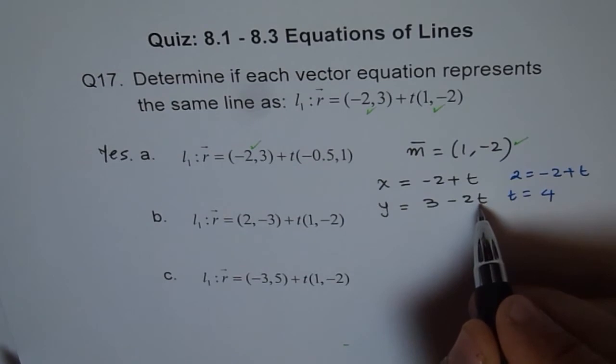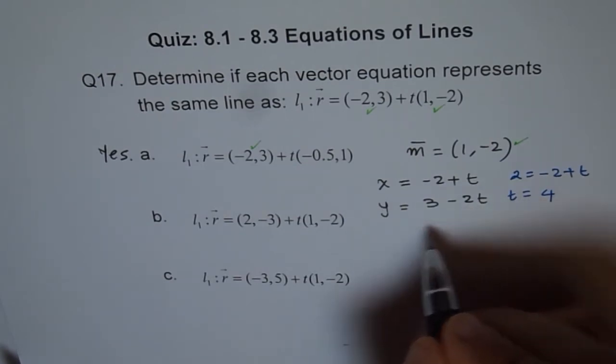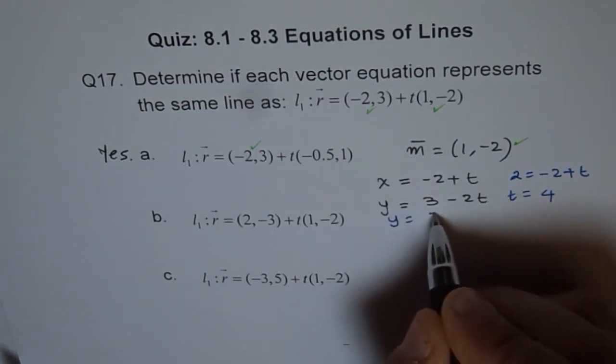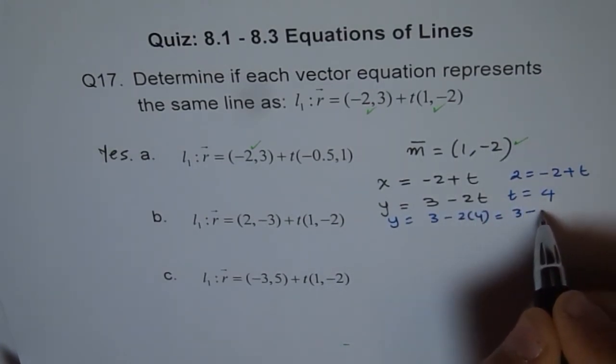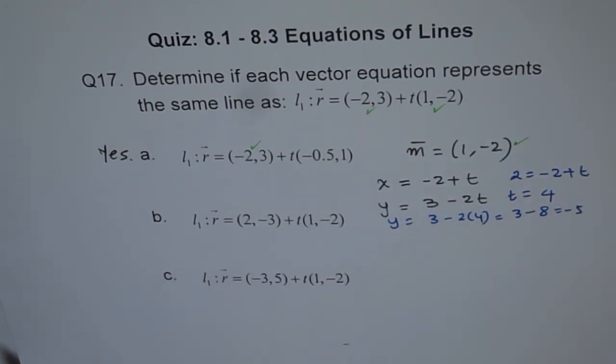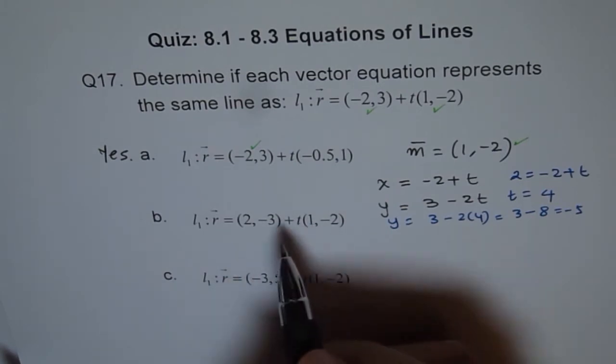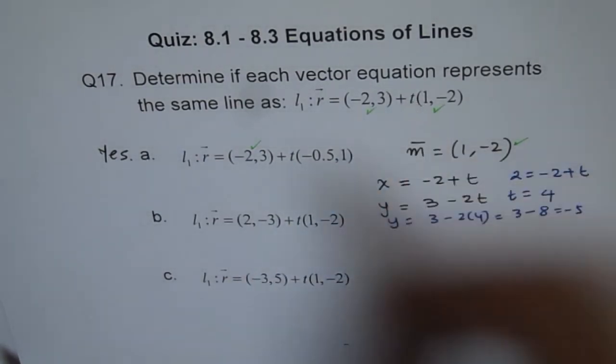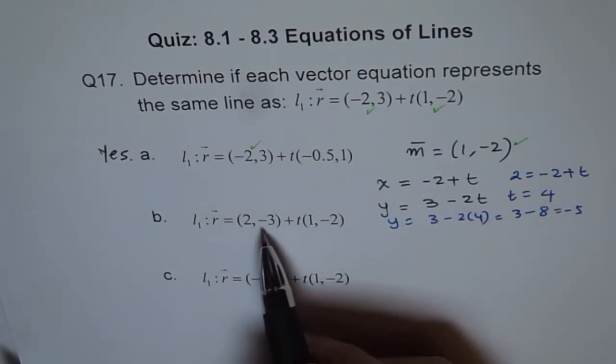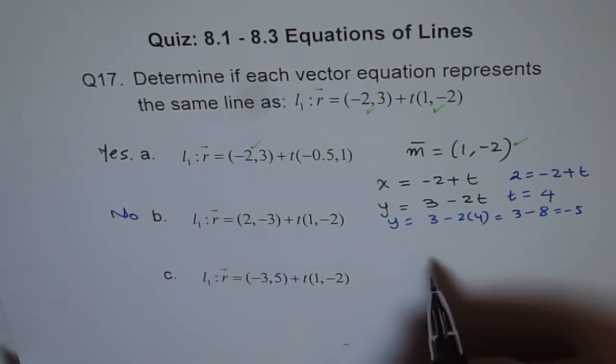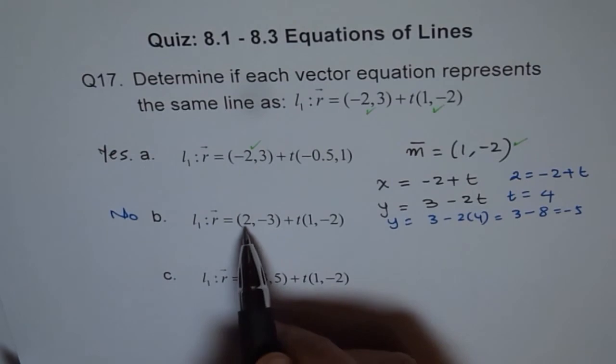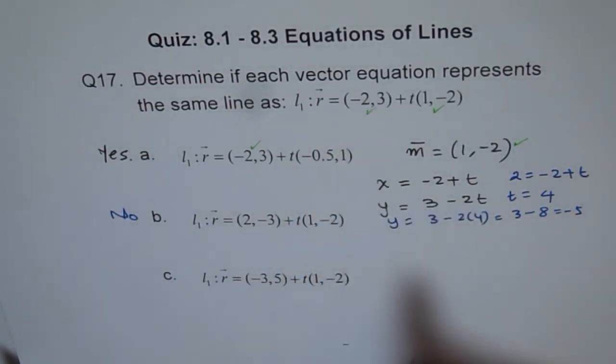And if I plug in t as 4 here, then what happens? Then the y value becomes y equals 3 minus 2 times 4, which is 3 minus 8, which is minus 5, not minus 3. So this point does not lie on the given line. It is parallel. So this is not coincident. It is a parallel line. So this line is not coincident since the point (2, -3) does not lie on the given line.